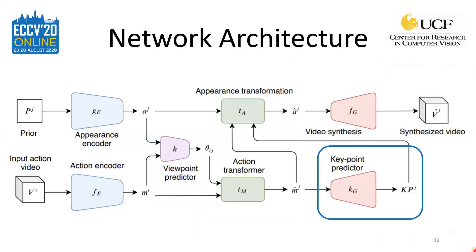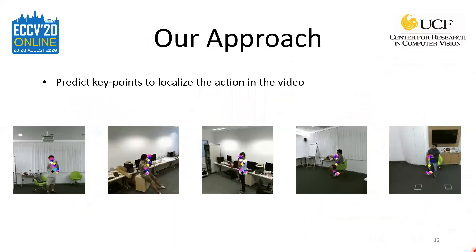We want the network to focus its attention on the area of the frame where the action occurs, so we use a key point predictor network to identify these areas. We predict the key points in an unsupervised way by using a 3D convolutional network to predict 32 action heat maps from the transformed action features. The heat maps are then converted to Gaussian heat maps with a standard deviation of 0.1 around the most active pixel in each action heat map, which serve as a Gaussian mean. The network includes upsampling via trilinear interpolation to produce 32 Gaussian heat maps or key points at a resolution of 16 x 56 x 56. Here we show some results of the key point predictor network. You'll notice that the key points are located in the area of motion in the video, which indicates that they successfully identify the action. These are then used so that the appearance transformer and video synthesizer can focus on these areas. The key point localization is not perfect, but as the key points are learned in an unsupervised way, this is expected and still works sufficiently well.